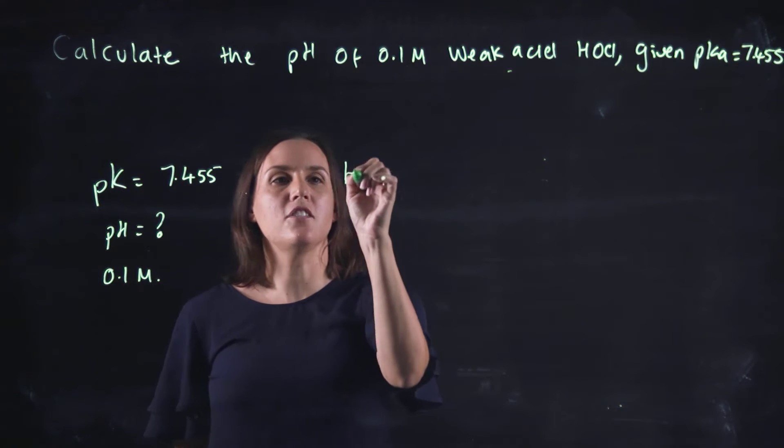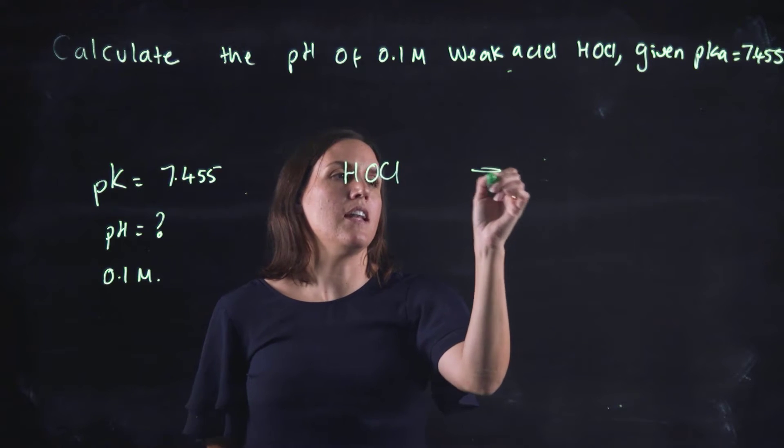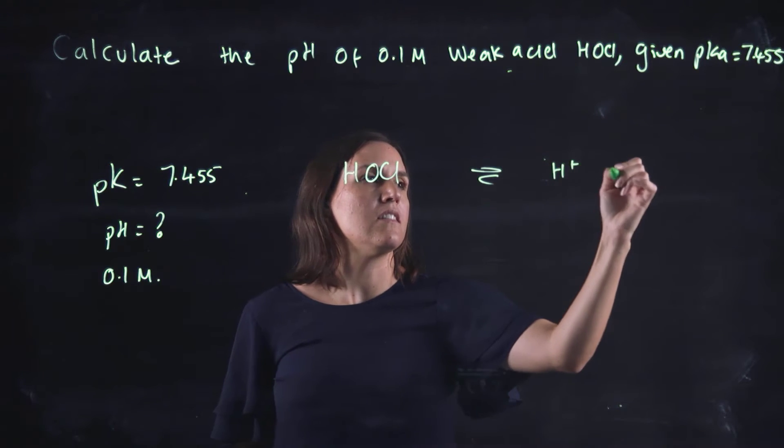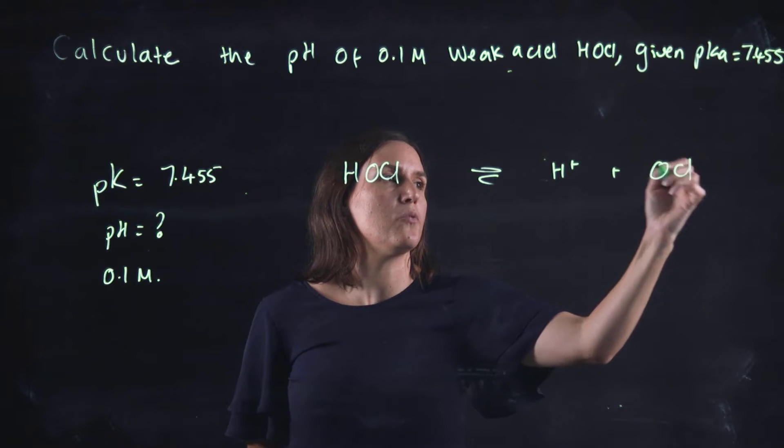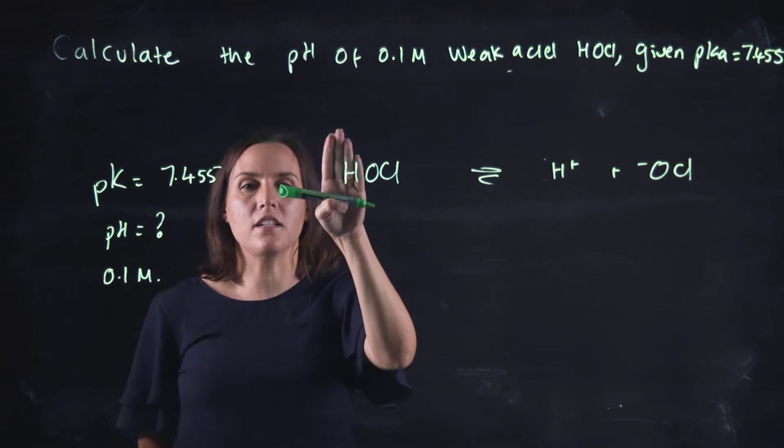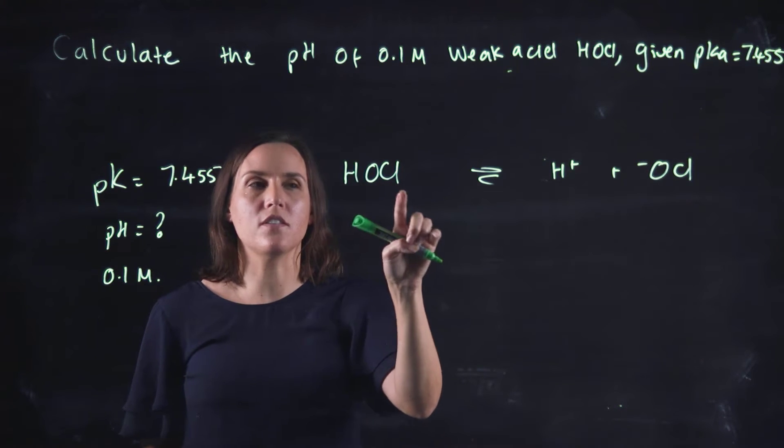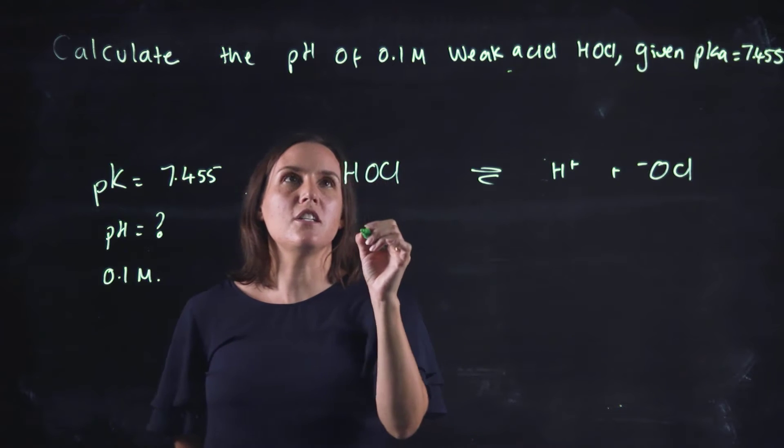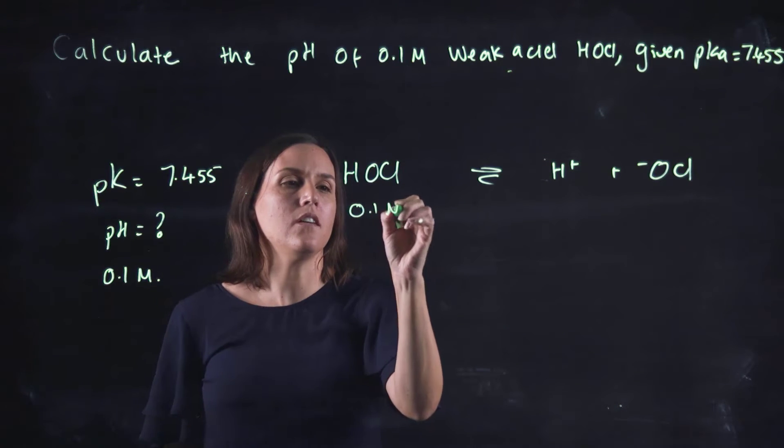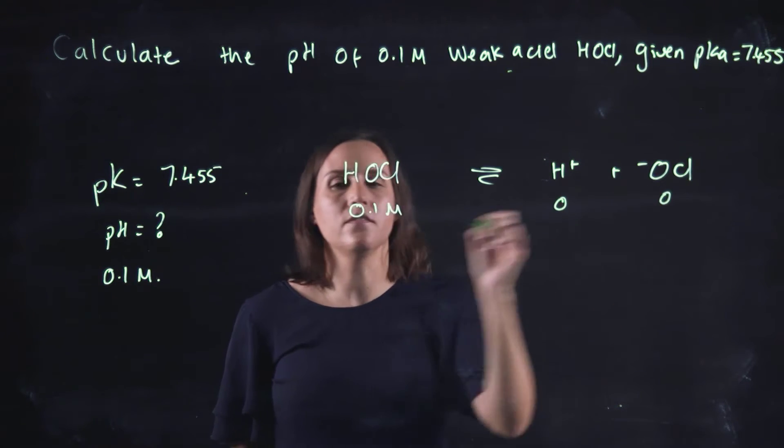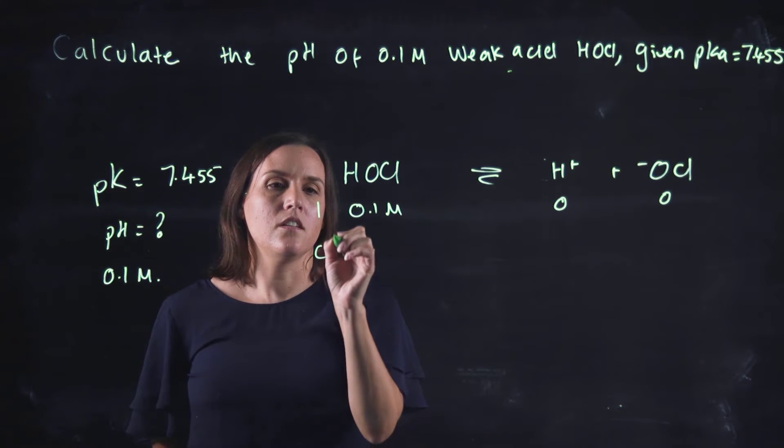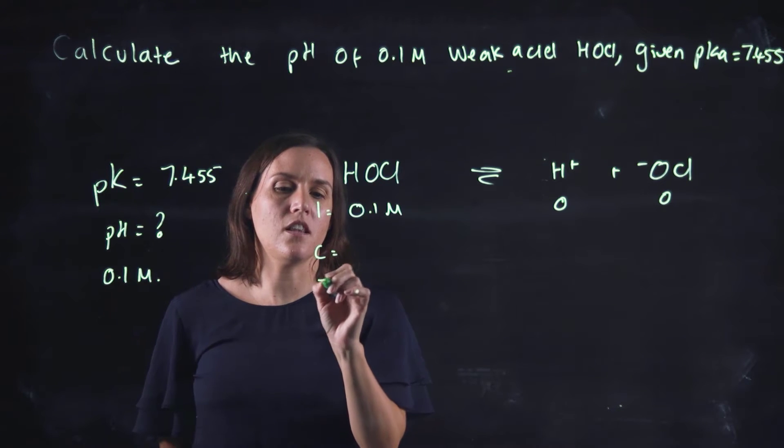So the acid is HOCl and it will dissociate into H+ and the conjugate base which would be OCl minus. So initially we would have 0.1 molar, 0, 0, the change and the equilibrium.